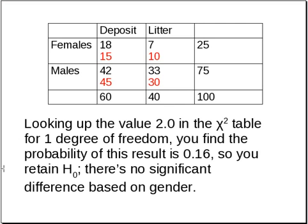If you look up 2.0 in the chi-squared table with one degree of freedom, you'll find that the probability of this result is 0.16, so you retain the null hypothesis. There's no significant difference in littering or garbage-depositing behavior based on gender. We'll talk a little bit later about how that degrees of freedom was calculated.